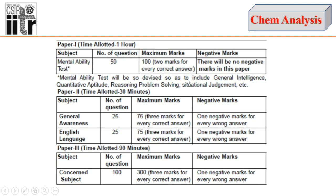After acquiring the cutoff marks for the Mental Ability Test, the evaluation for the other two papers will be done. The second paper covers general awareness and English language, with a total of 50 questions carrying 150 marks — that is 3 marks per question — and there will be one mark negative marking for each wrong answer.